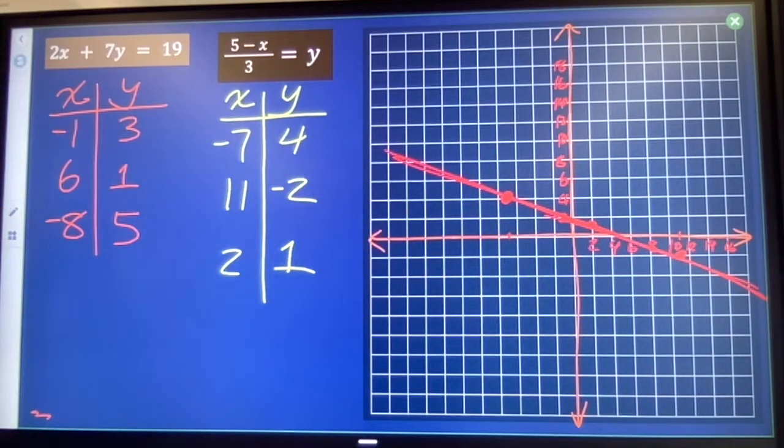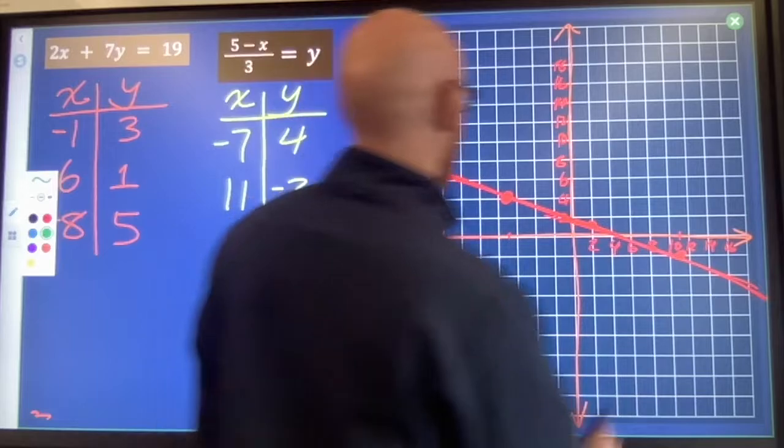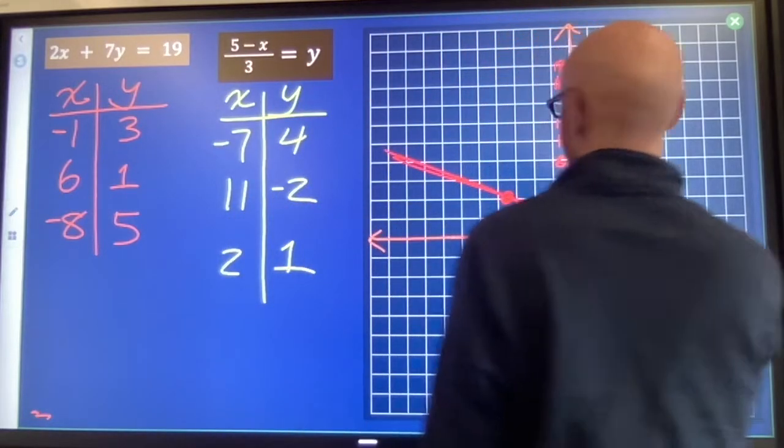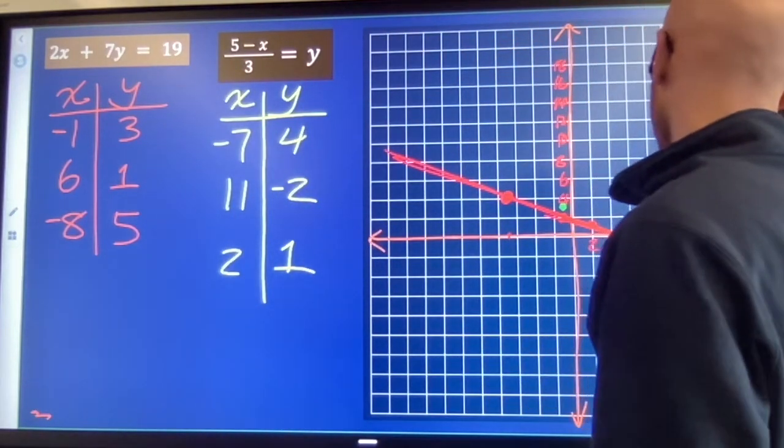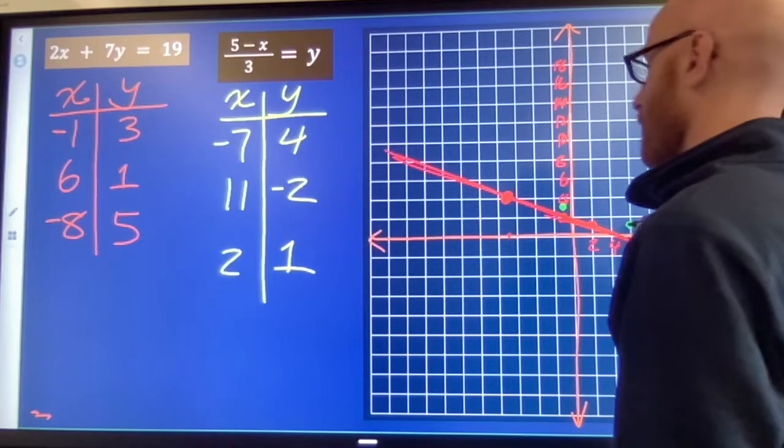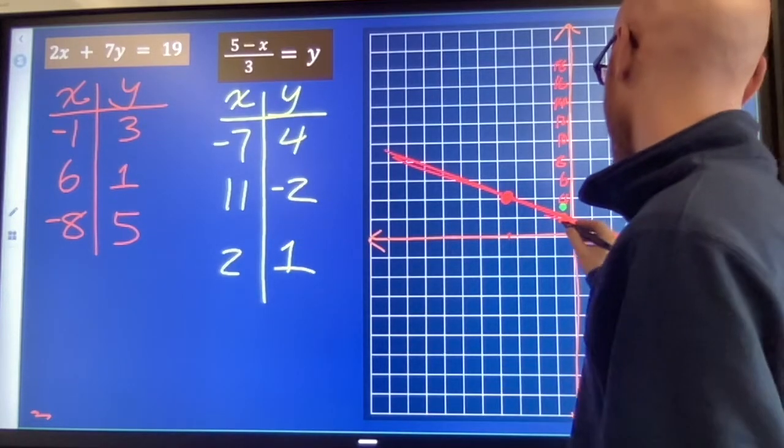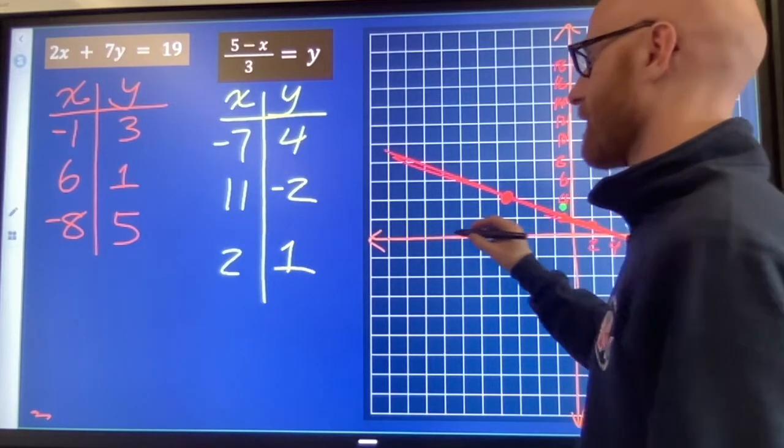If they don't line up in a straight line, one of your points, at least one of your points, is wrong. So this guy over here: negative 1 comma 3, 3 comma 6, 6 comma 1, negative 8 comma 5.